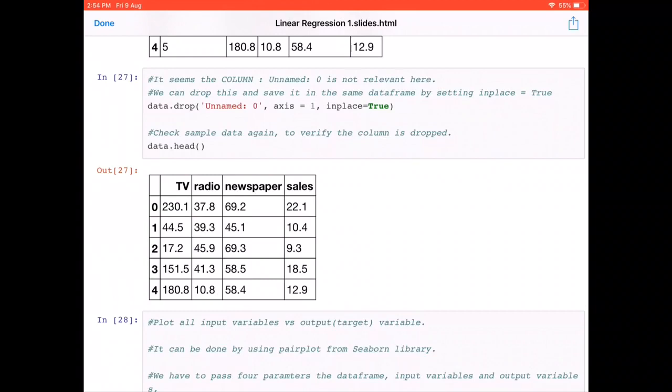So what we are going to do is drop that column. Look at the two parameters here: axis equals one and inplace equals true. Axis equals one tells that we have to drop a column and not a record. If axis equals zero, that means it is trying to drop a record with a label name unnamed. But here we are trying to drop a column. Inplace equals true means we are trying to overwrite the same data frame and not create a new data frame here.